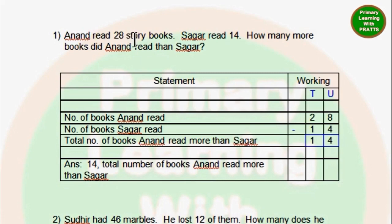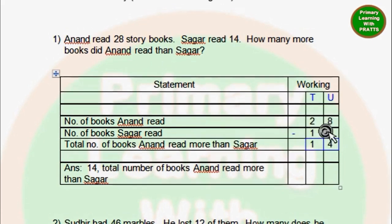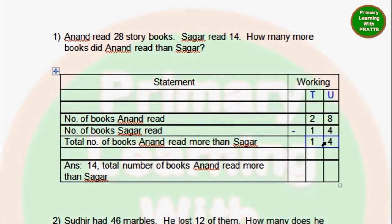Anand read 28 story books — first statement. Sagar read 14 — second statement. How many more books did Anand read than Sagar — third statement. So 28 minus 14: 8 minus 4 is 4. 2 minus 1 is 1. So the answer is 14. Again you will underline this with blue pencil. Answer: 14. Total number of books Anand read more than Sagar.